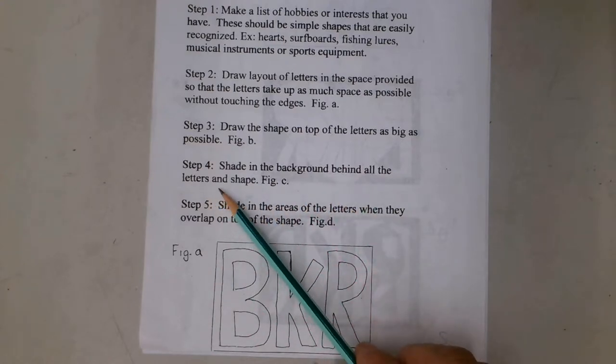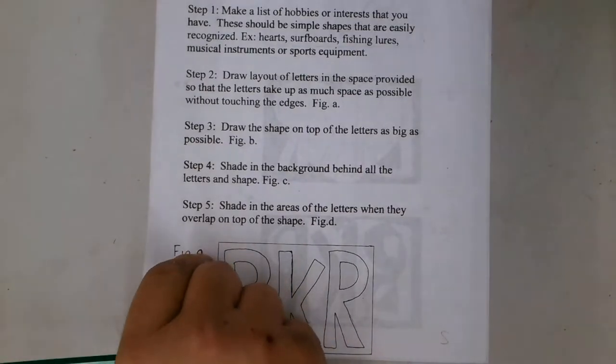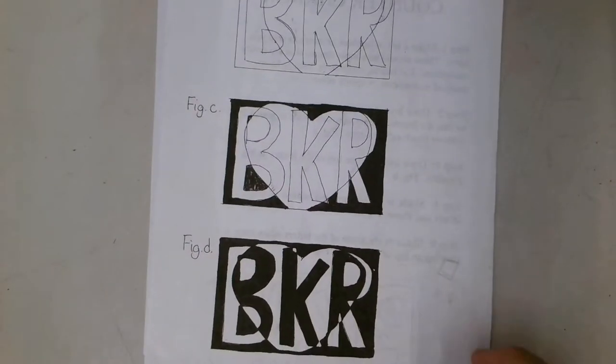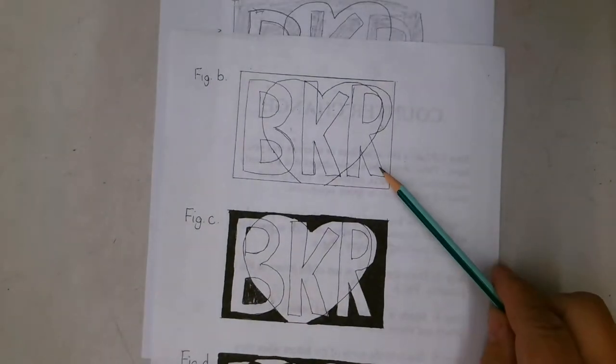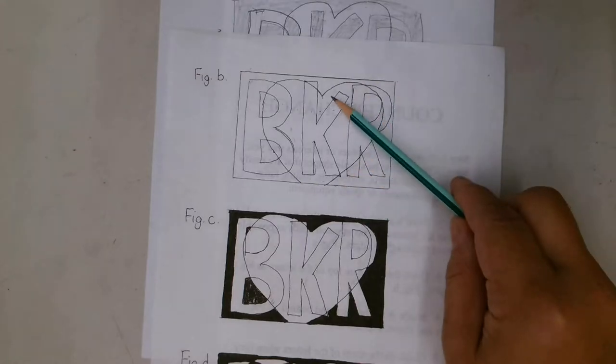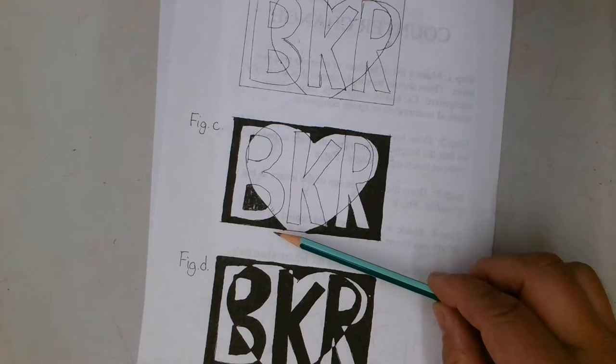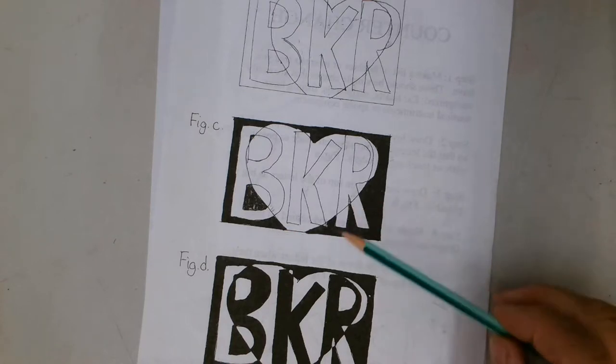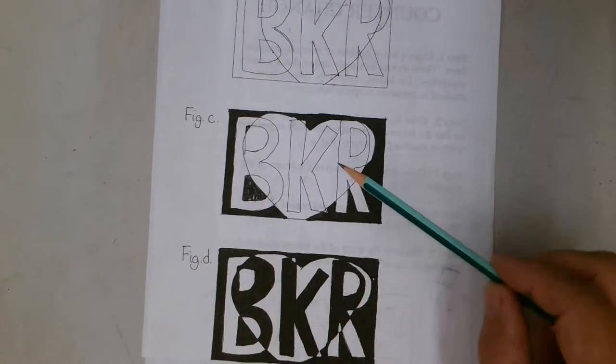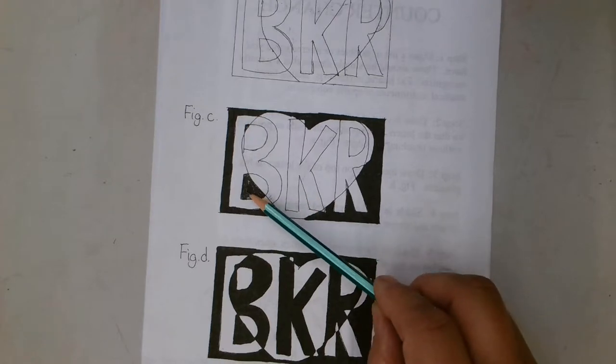Shade in the background behind all the letters and the shape. You have to go to figure C to see that. Figure B is the letters, and here's the shape of a heart on top of the letters. Figure C says shade in everything that's the background. Everything in this design that's not a letter or not the heart gets shaded in.